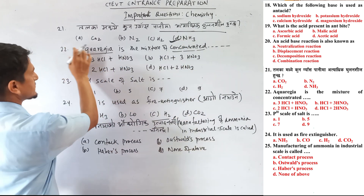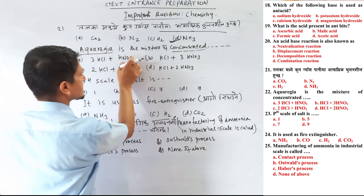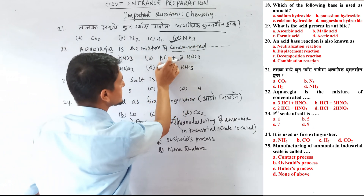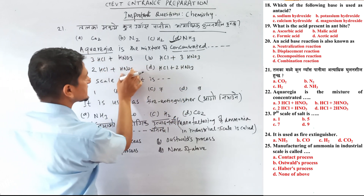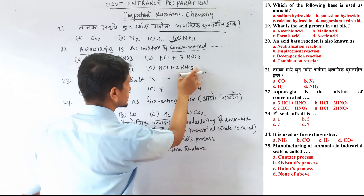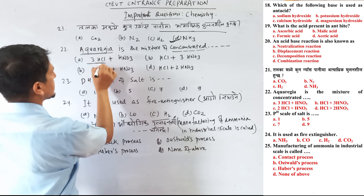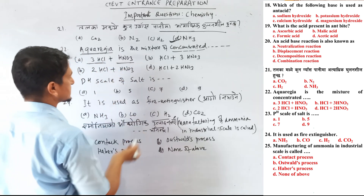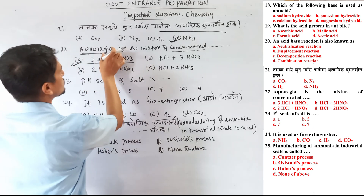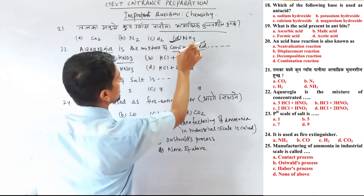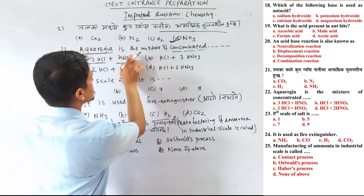Question number 22: Aqua regia is a mixture of concentrated acids — 3 parts HCl and 1 part HNO3.